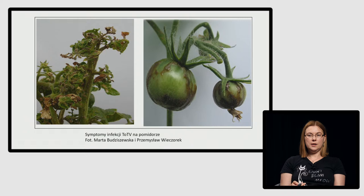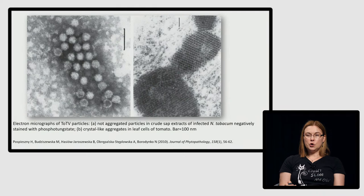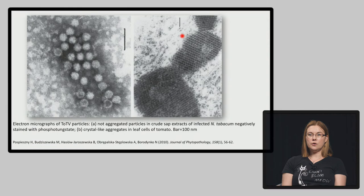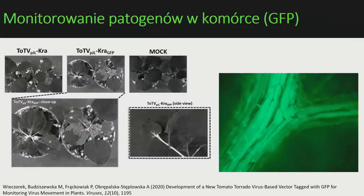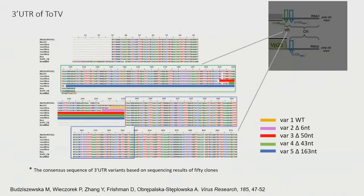Inne sposoby unikania przez wirusa odpowiedzi obronnych: wiriony gromadzą się w agregaty przypominające kryształy, będąc mniej dostępne dla mechanizmów obronnych rośliny. Wirus może też szybko przenosić się do wyższych partii rośliny, wykorzystując waskulaturę. Dzięki białku zielonej fluorescencji, którym wyznakowany był wirus, widzimy jak szybko przemieszcza się przez roślinę, stopniowo wchodząc do liści.